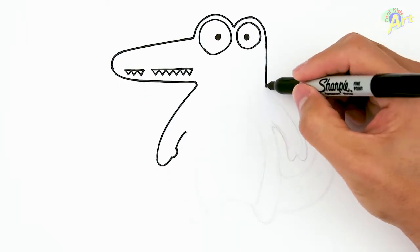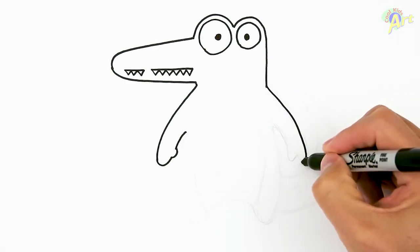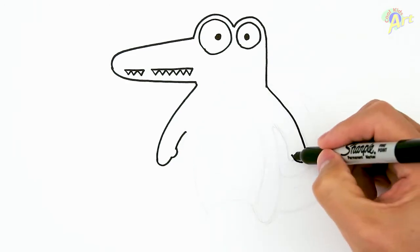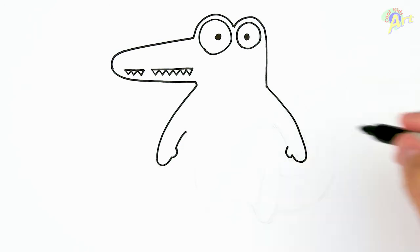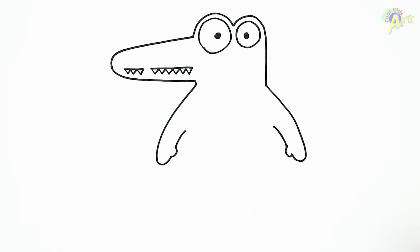And then the other side. Come all the way down, curve it back. Same thing, just give it a little bit of thumb and then have it go all the way back up. Okay, now we have his arm. So let's move on to the rest of the body.